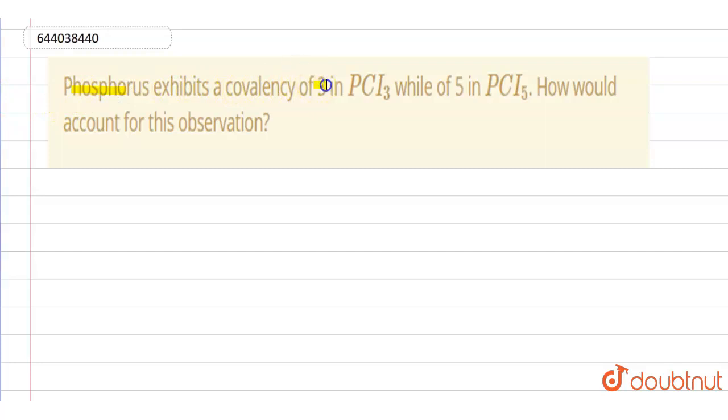a covalency of 3 in PCl3 while 5 in PCl5. How would you account for this observation? Okay, so in the case of phosphorus, atomic number of phosphorus is 15 and its electronic configuration is 2, 8, and 5. If we write according to orbital rules, it will be 1s² 2s² 2p⁶ 3s² 3p³.